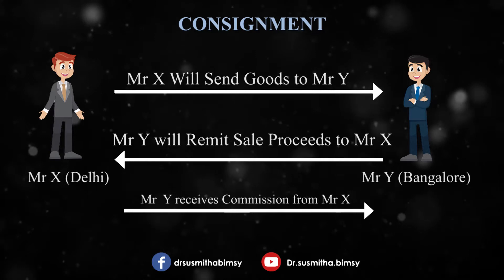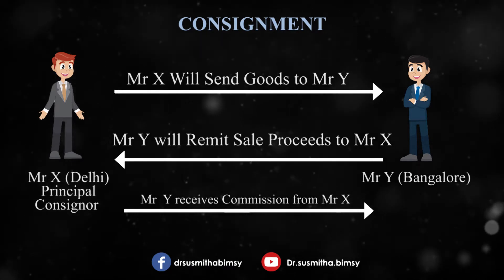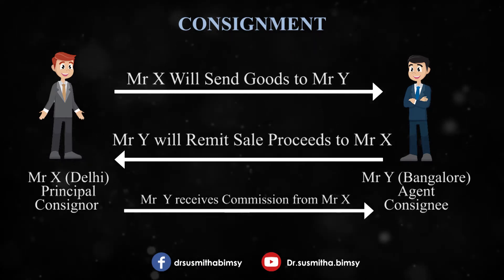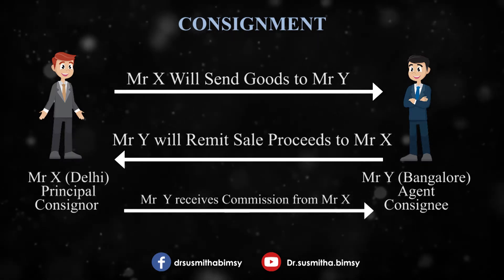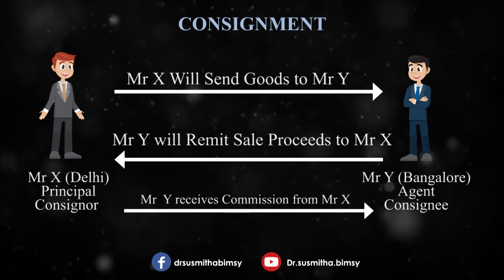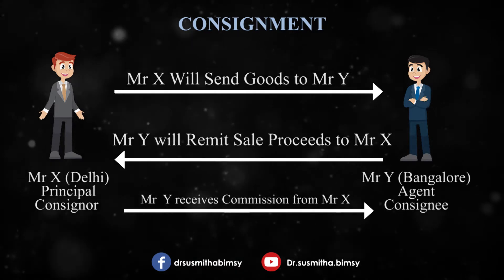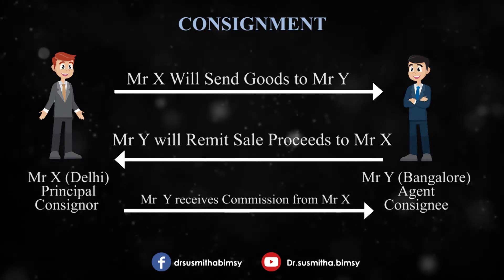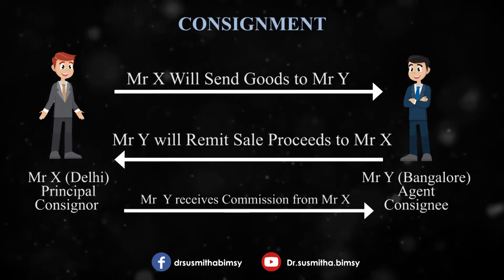There are two persons involved. Mr. X is called the principal and Mr. Y is called the agent. In consignment, we call the principal the consigner — in other words, the person who consigns the goods is known as the consigner. We call the agent the consignee — in other words, the person to whom the goods are consigned is known as the consignee. The consignee receives the goods and sells them on behalf of Mr. X, and this entire process is known as consignment.